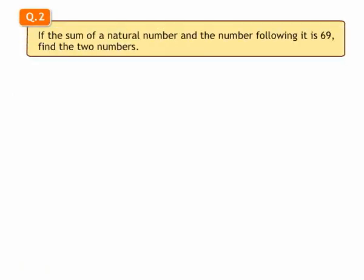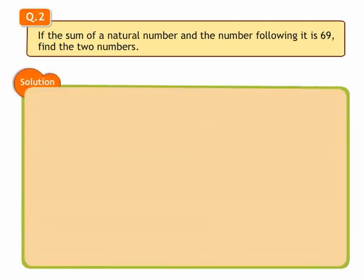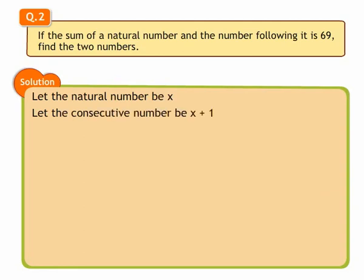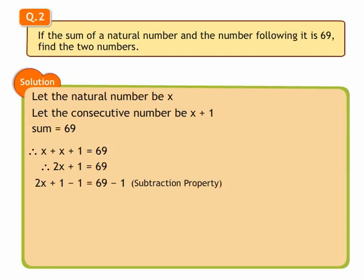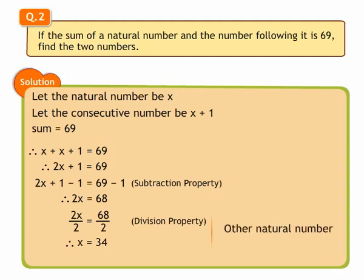2. If the sum of a natural number and the number following it is 69, find the two numbers. Let the natural number be x. The consecutive natural number is taken as x plus 1. The sum of two consecutive natural numbers is 69. Hence, we write x plus x plus 1 is equal to 69, which is equal to 2x plus 1 is equal to 69. Subtracting 1 on both sides, we get 2x is equal to 68. Dividing both sides by 2, we get x is equal to 34. Other natural number is x plus 1, which is equal to 34 plus 1, which is 35. The natural numbers are 34 and 35.